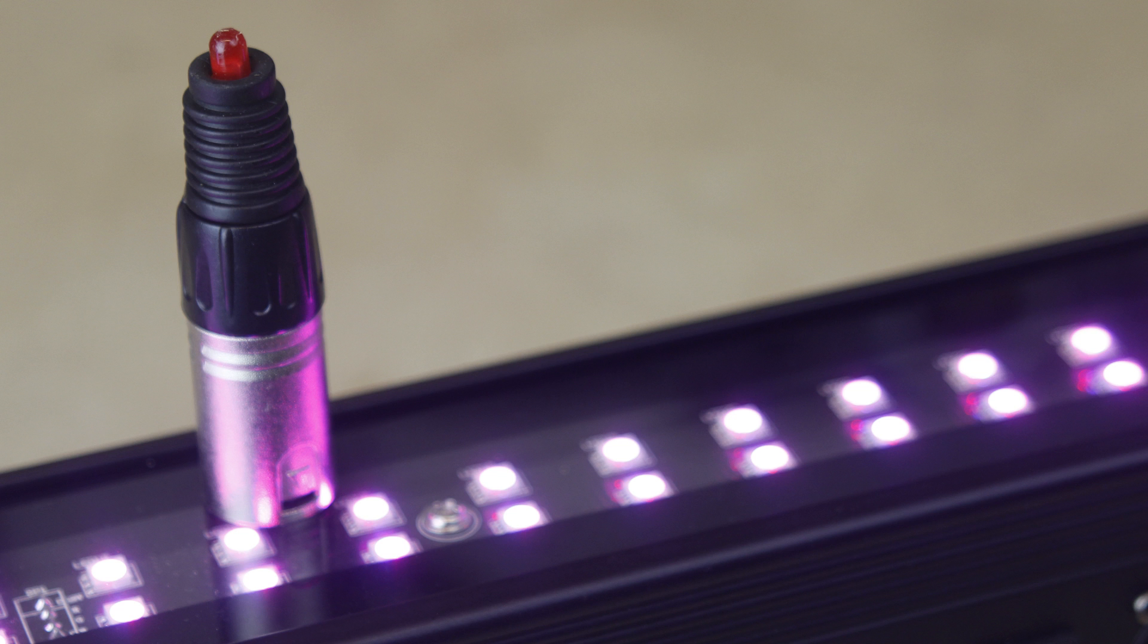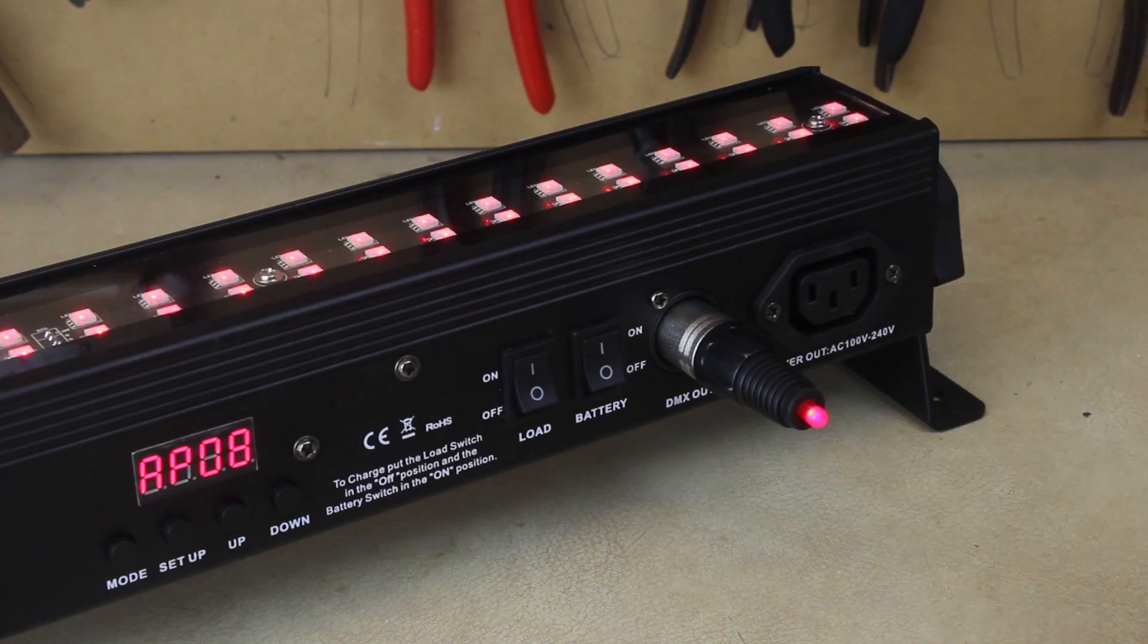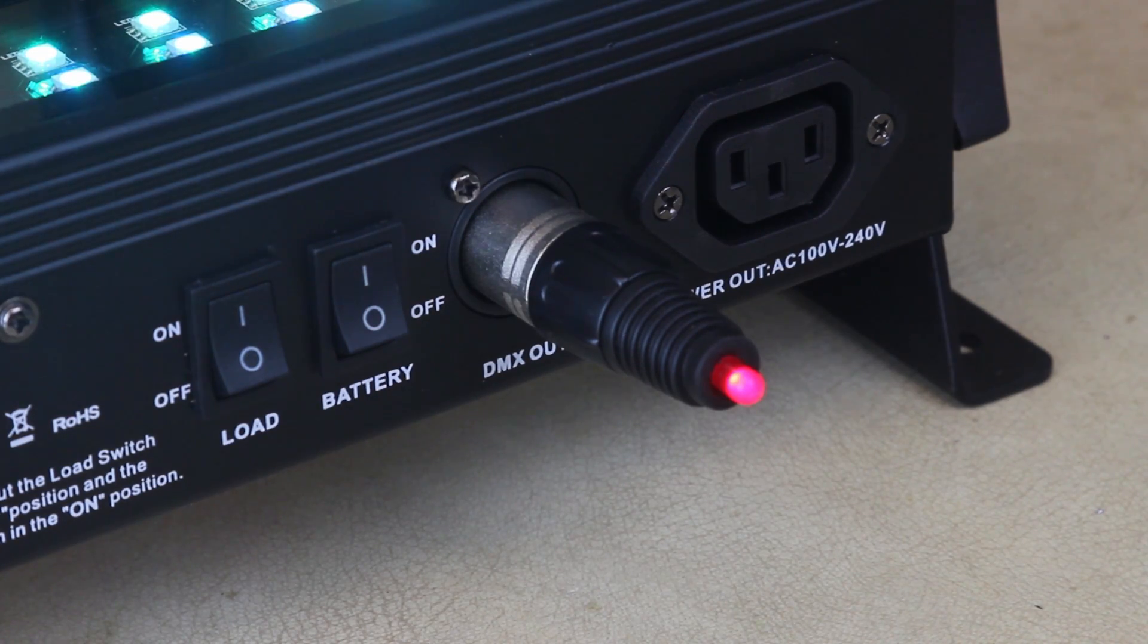Now you have a really simple DMX continuity tester to check you're getting a DMX signal. Simply plug it into the fixture or a DMX cable, and if the LED lights up, it means you're outputting DMX data.